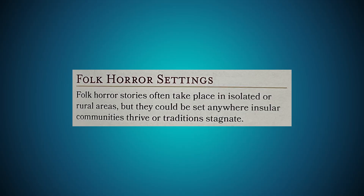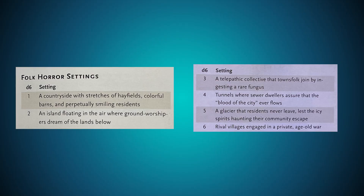Folk horror stories often take place in isolated or rural areas, but could be set anywhere insular communities thrive or traditions stagnate. The folk horror settings D6 table includes: a countryside with stretches of hayfields, colorful barns, and perpetually smiling residents; an island floating in the air where ground worshippers dream of the lands below; a telepathic collective that townsfolk join by ingesting a rare fungus; tunnels where sewer dwellers assure the blood of the city ever flows; a glacier that residents never leave lest icy spirits escape; and rival villagers engaged in a private age-old war. That glacier one stands out — the whole town sacrifices themselves to stay there and keep the bad guy trapped. That's a cool approach.